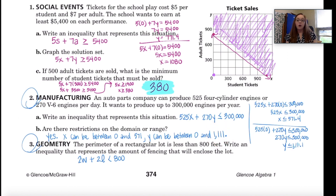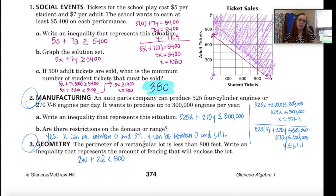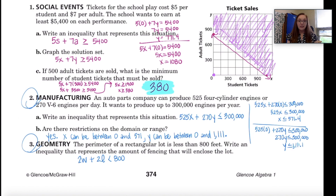For number 3, note that this is an L-shaped figure. Remember that to find the perimeter of a rectangle, you do 2 times the length plus 2 times the width. So if the perimeter is less than 800 feet, that means 2W plus 2L is less than 800. If you have questions about any of these problems, please contact me. Once you've submitted this assignment and made your necessary corrections, you'll be ready to complete your independent practice. Good luck.